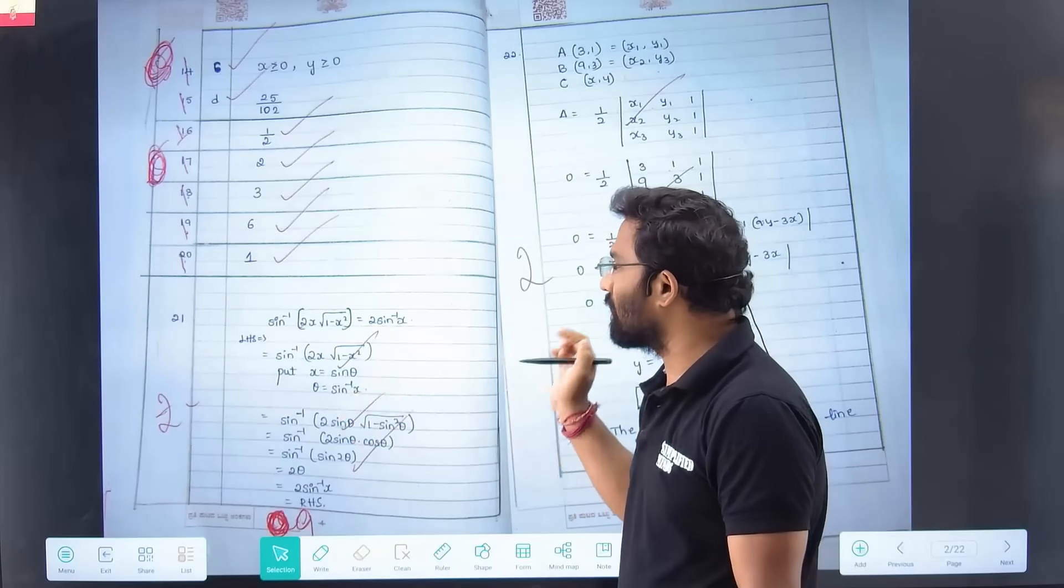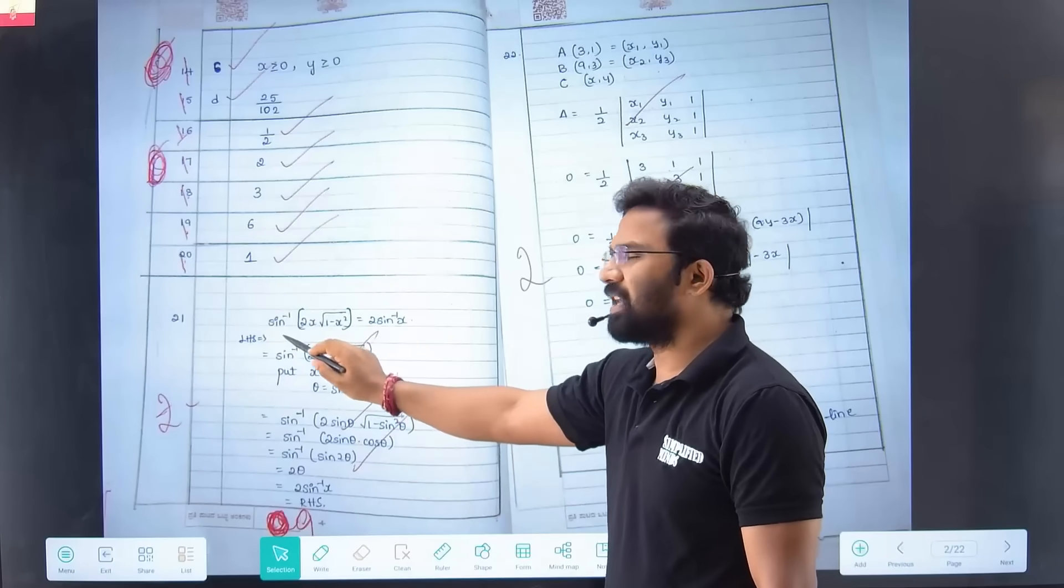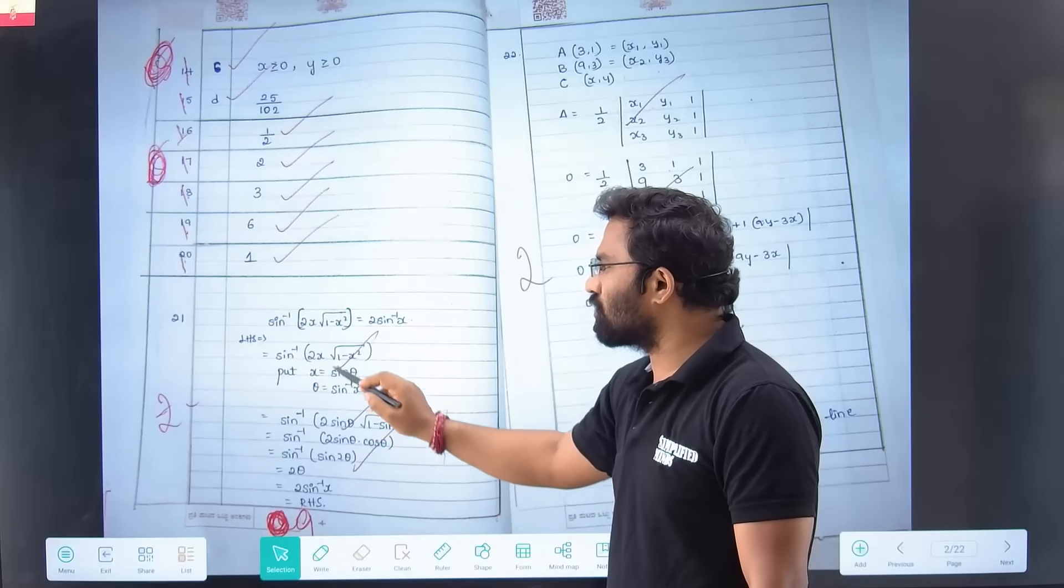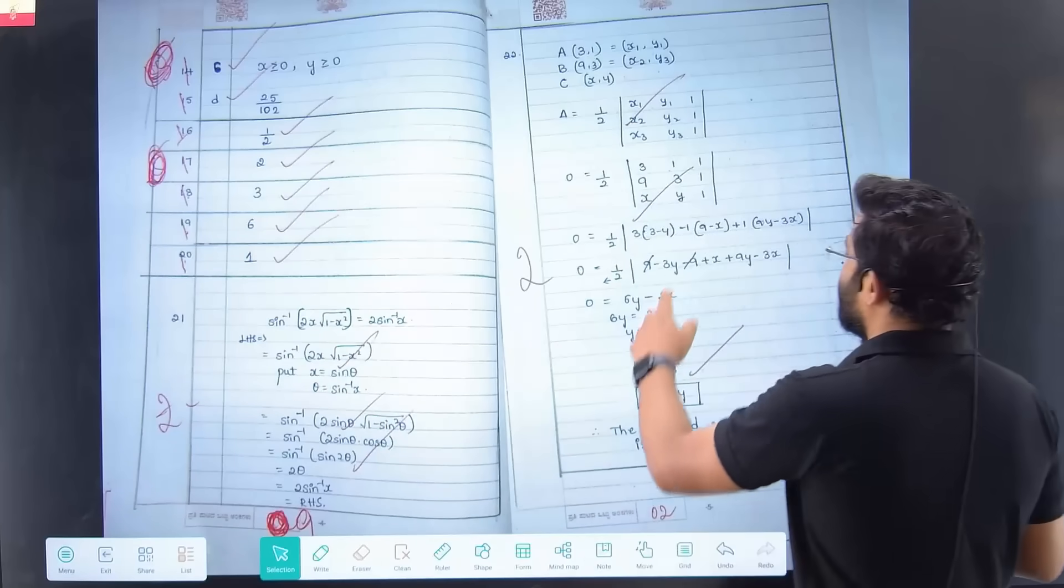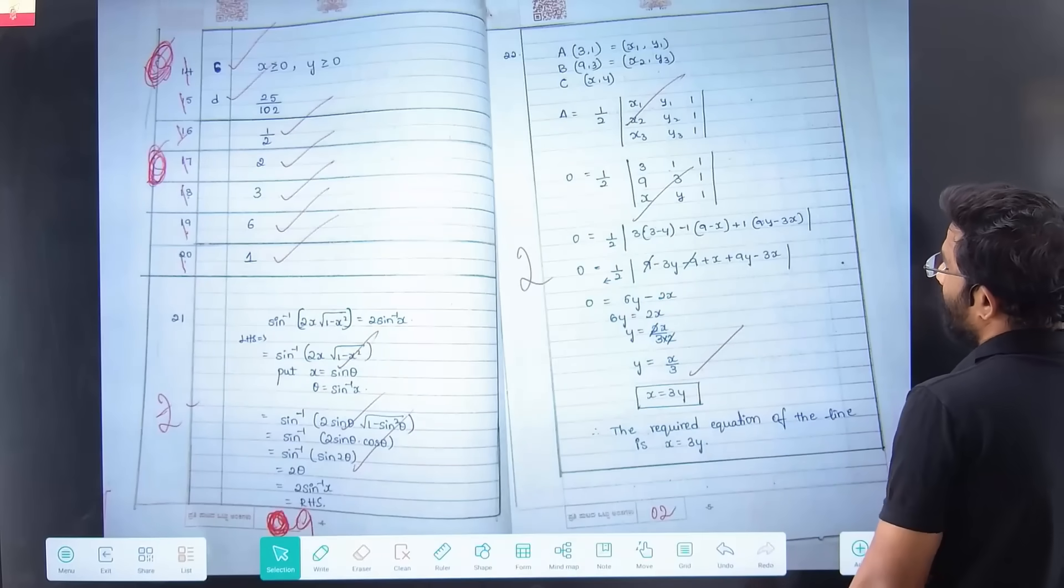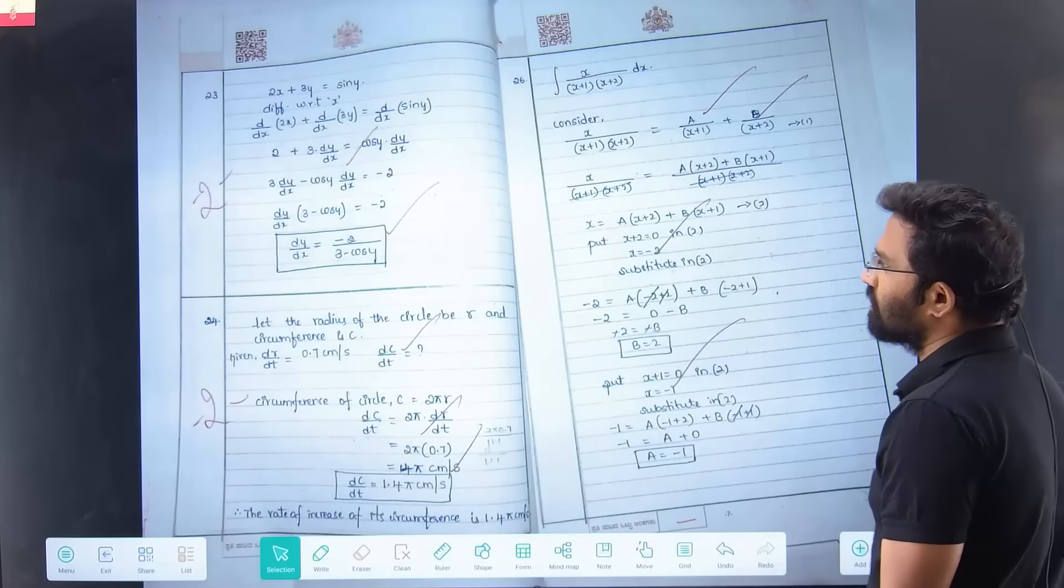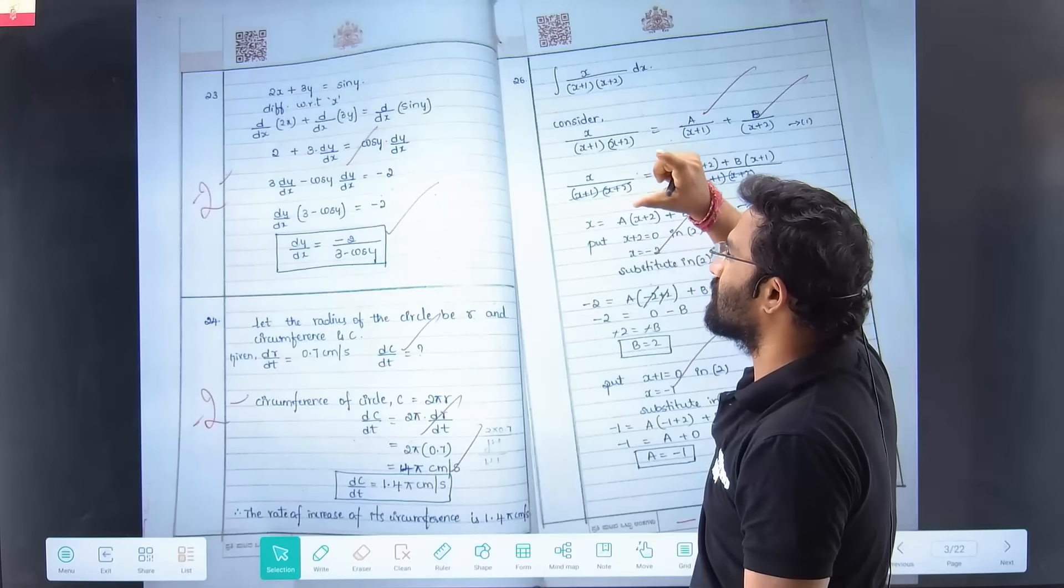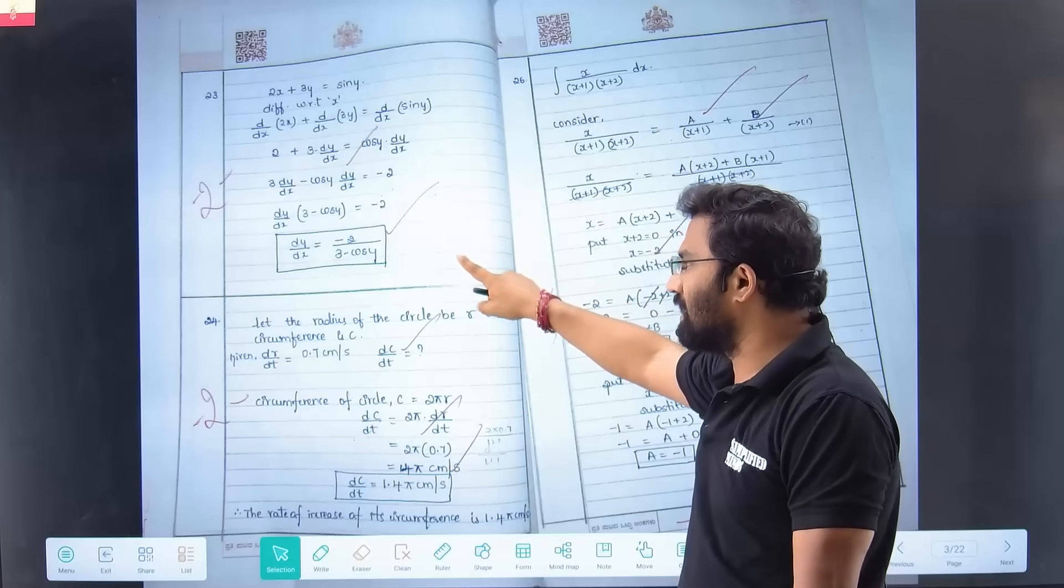After this, we have fill in the blanks. Then you have two markers. This is a question from trigonometry. These steps are very important. When LHS is given and RHS is given, you have to show LHS is equal to RHS, then you will get full marks.